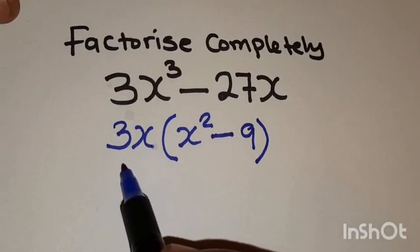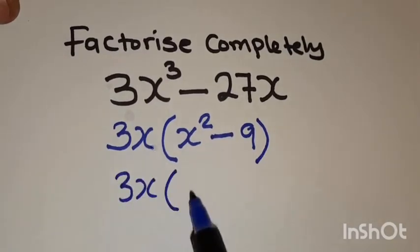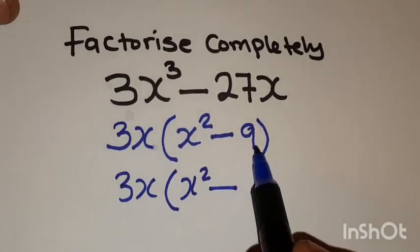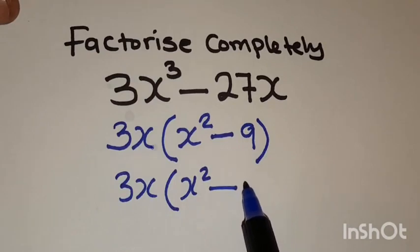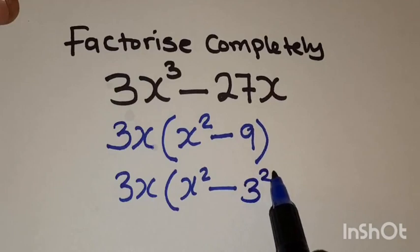Then we are going to have 3x, x squared minus 9 is a square number. And 9 can be written as 3 squared.